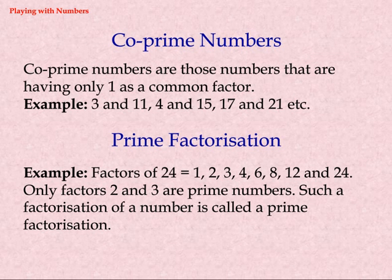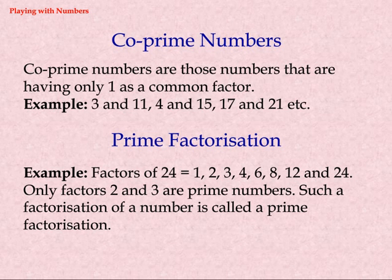Co-prime numbers are those numbers that have only 1 as a common factor. Examples: 3 and 11, 4 and 15, 17 and 21, etc.